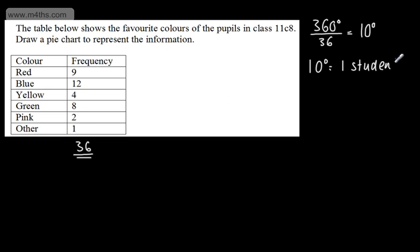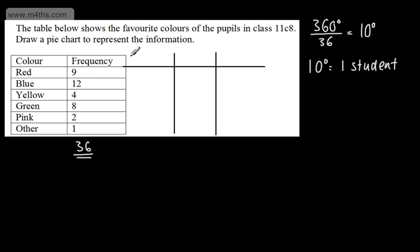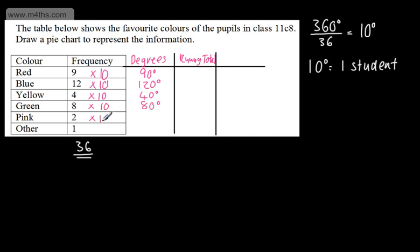So 10 degrees equals one student. I'm going to add two columns to the table: one for degrees needed and one for a running total. For the frequency of 9: 9 times 10 gives 90 degrees. Then 12 times 10 is 120 degrees. Next, 4 times 10 gives 40 degrees. Then 8 times 10 gives 80 degrees. Then 2 times 10 gives 20 degrees. And finally, 1 times 10 gives 10 degrees.